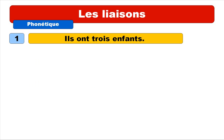For the first one, let's pronounce it without the liaison first: ils ont trois enfants. And then if we make the liaison, you can see that it's possible to make actually two liaisons in this sentence — the first one between ils and ont, and the second one between trois and enfants. So we get: ils ont trois enfants. Repeat: ils ont trois enfants.